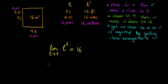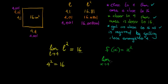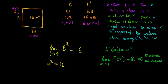We also know that 4 squared is equal to 16. So if we talk about function notation and say f(x) is equal to x squared, then we can say that the limit when x tends to 4 of f(x) is equal to 16. This is what we would expect to happen at x equal to 4. What actually happens is when we substitute: f(4) equals 4 squared equals 16.